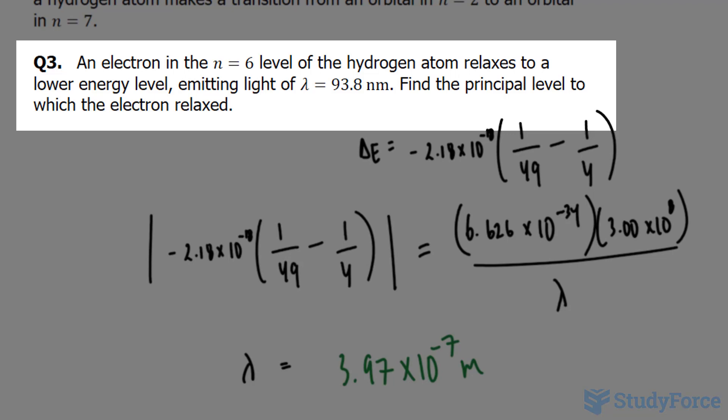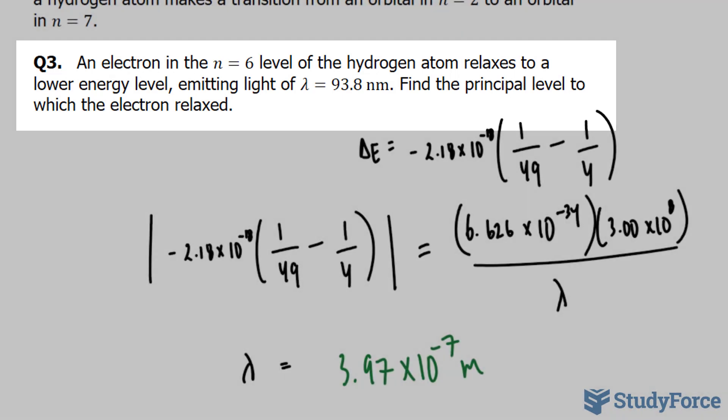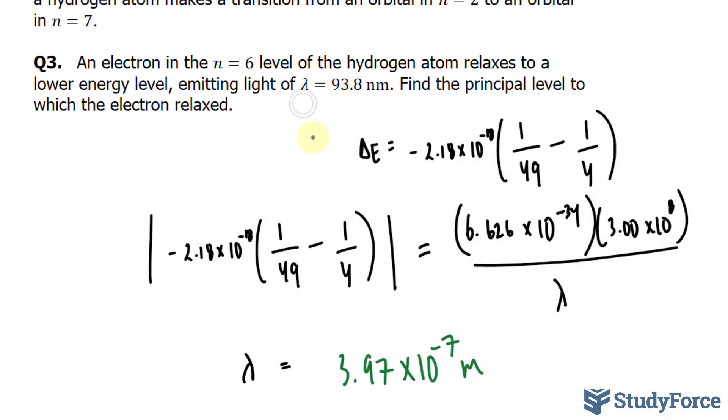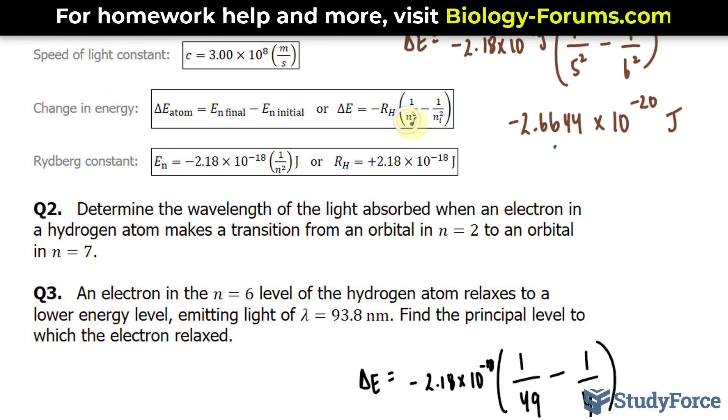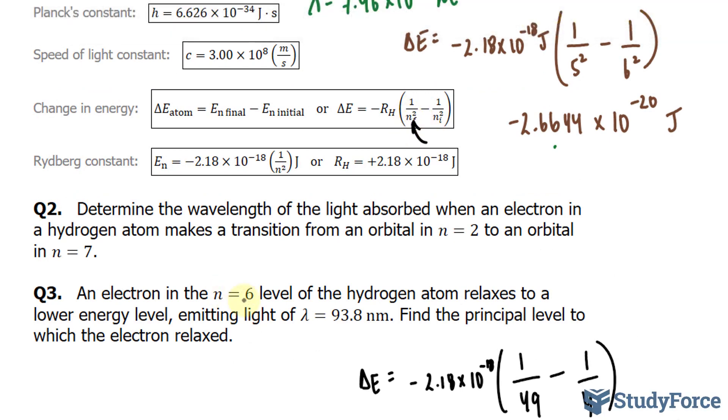Find the principal level to which the electron relaxes. So we've been given the wavelength, and that's much different than what we had to do in question one and two where we were looking for the wavelength. This time we're actually looking for the n final, this part. We've been given n initial, that's 6, and we have to algebraically manipulate an equation to find out what n final is.